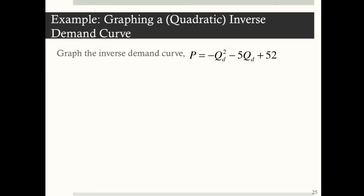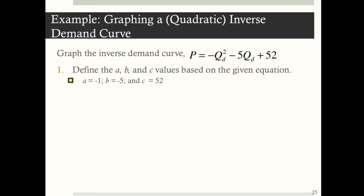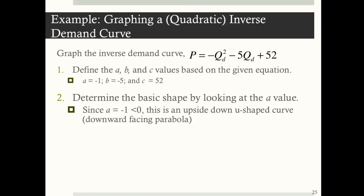So let's graph a quadratic inverse demand curve. We have p is equal to negative q squared minus 5q plus 52. The first thing we want to do is define those a, b, and c values: a is equal to negative 1, b is equal to negative 5, and c is equal to 52. It's important to remember those negatives. Then determine the basic shape by looking at the a value. Since a is negative 1, which is less than 0, this is going to be an upside-down u — a downward facing parabola.